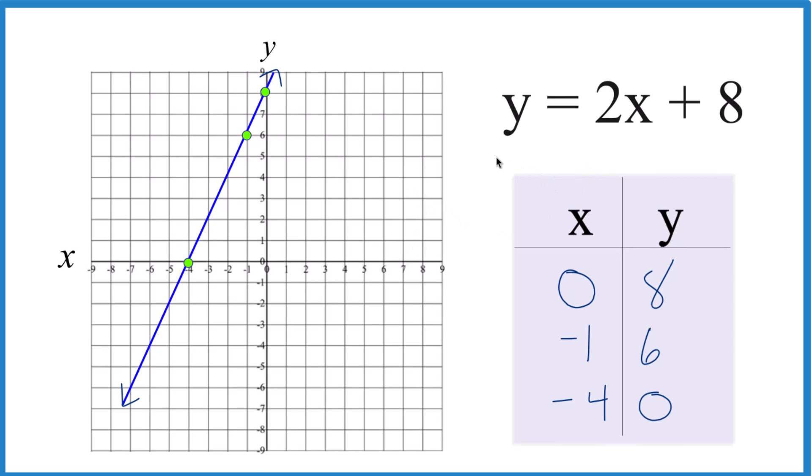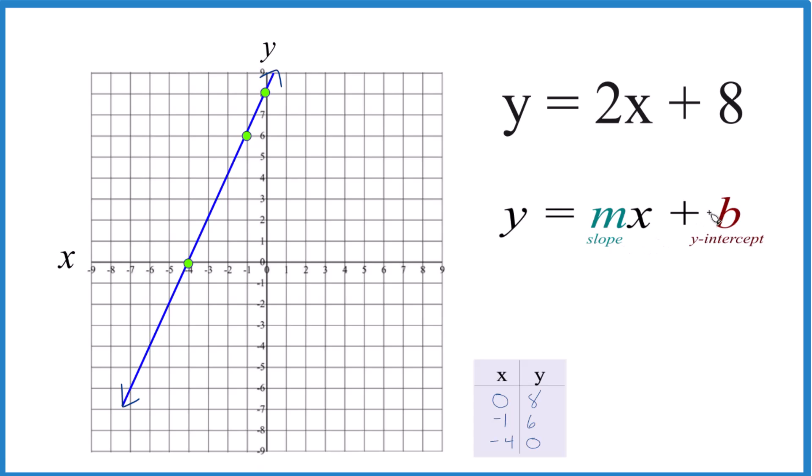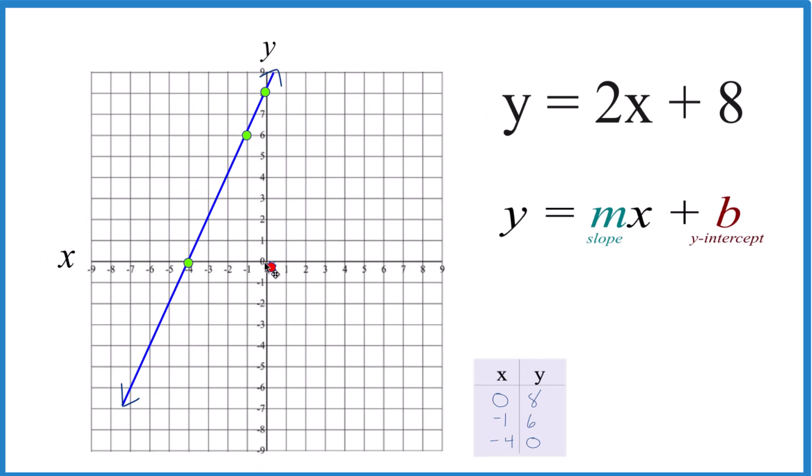Let's do this with slope-intercept form now. So y equals mx plus b. b, that's the y-intercept. That's 8. So we'll just find 8 on the y-axis there. And there's the y-axis right there. So it's the same as we had before, and that happens sometimes.